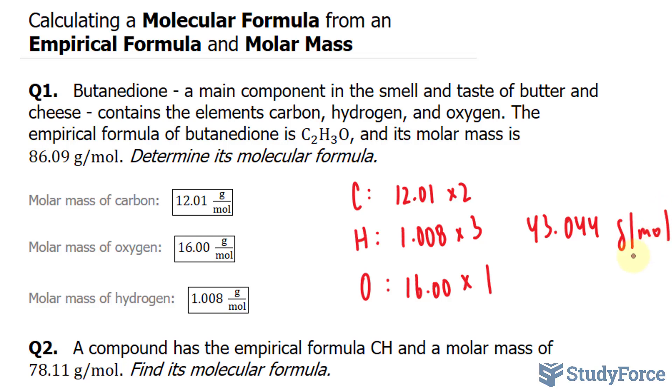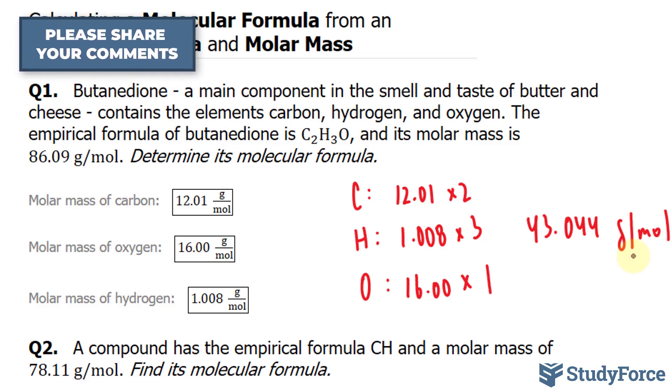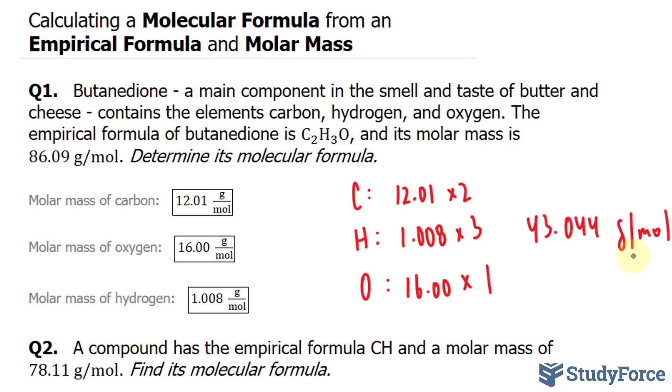Now keep in mind that in that calculation we multiplied and then we added. When you add, for significant figures, you need to keep into account the lowest number of decimal places. Given that these numbers have two decimal places, we should limit our number to two decimal places as well. So anything after this 4 is considered insignificant.